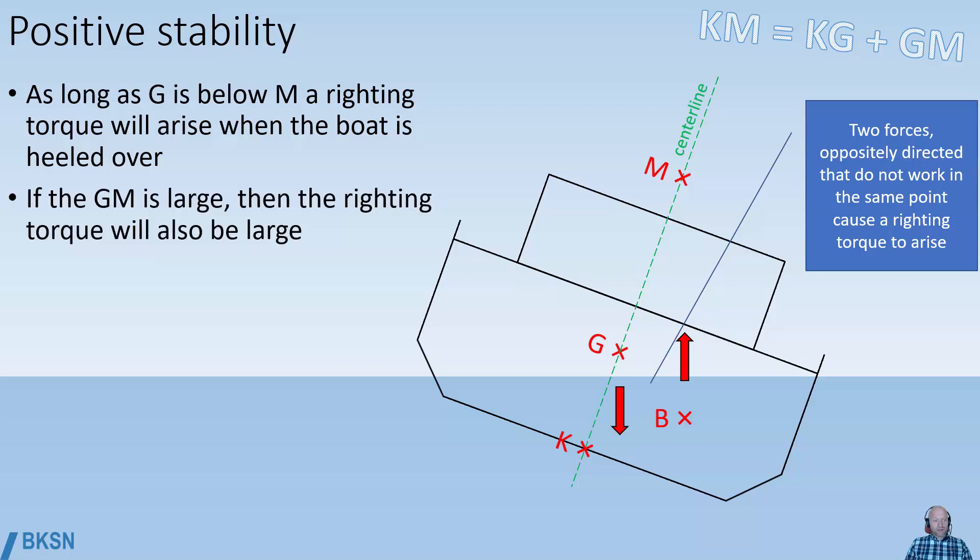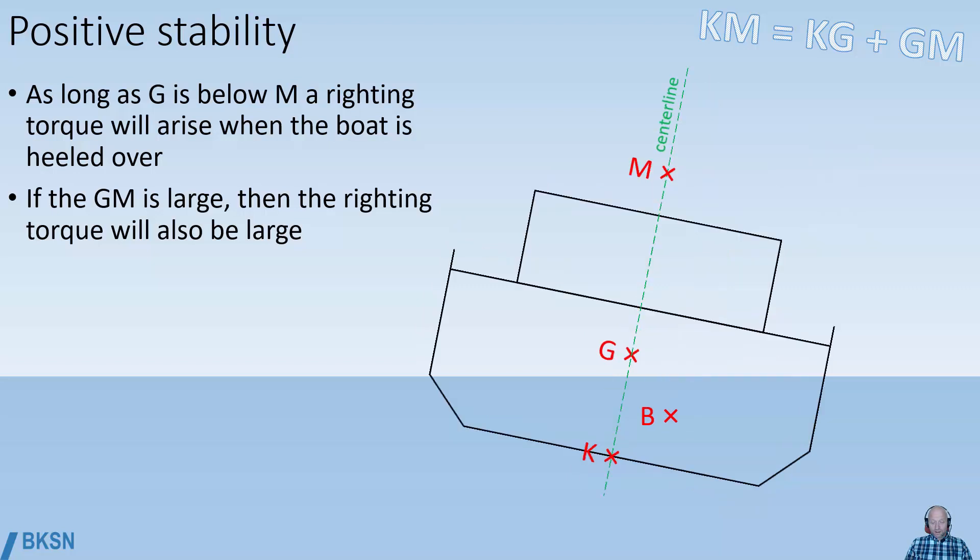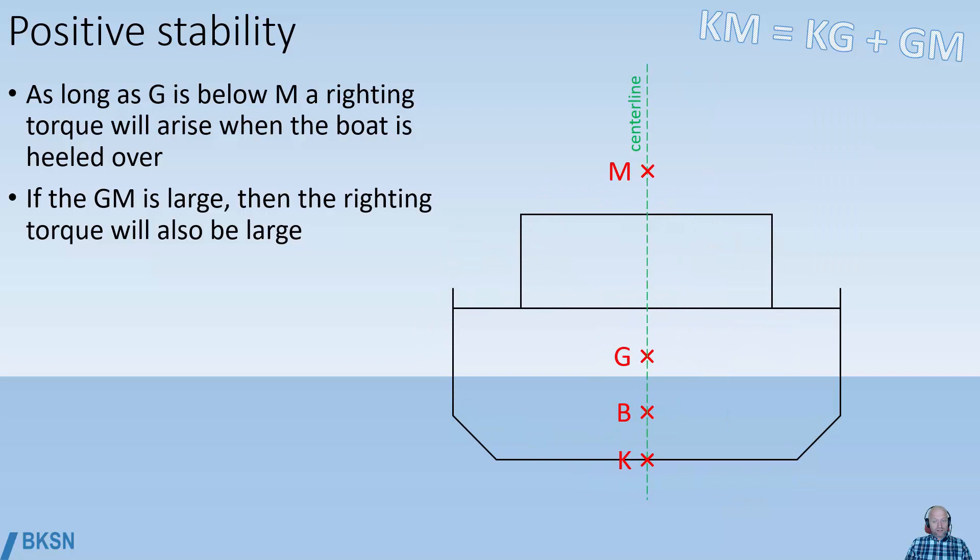If GM is large, then the righting torque will also be large, causing the vessel to return to the upright position.